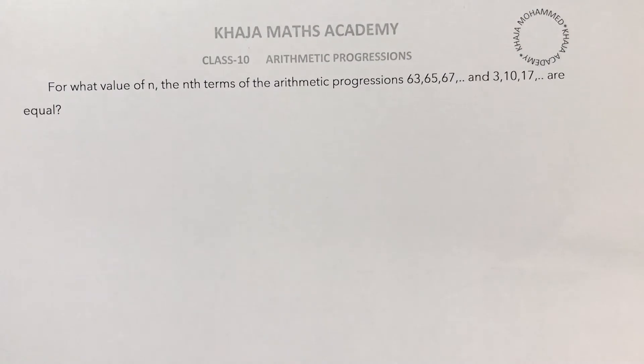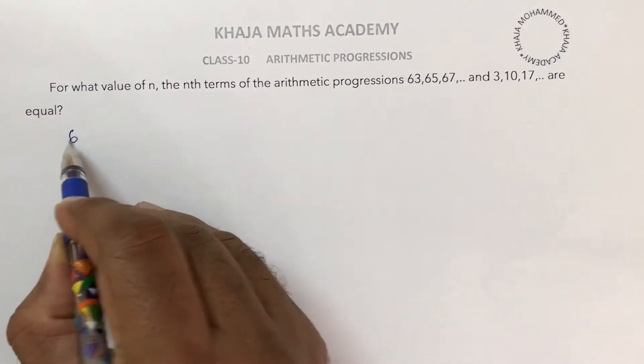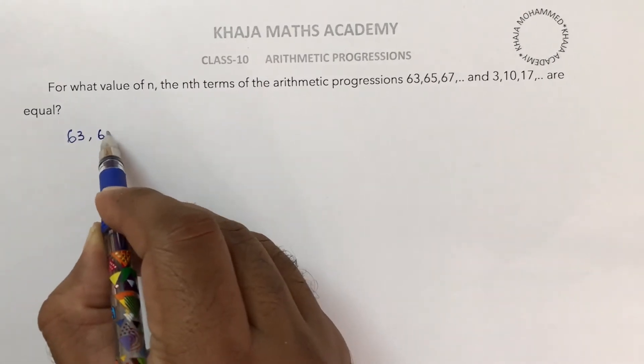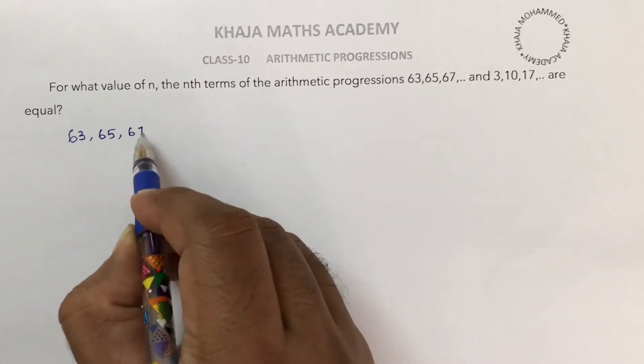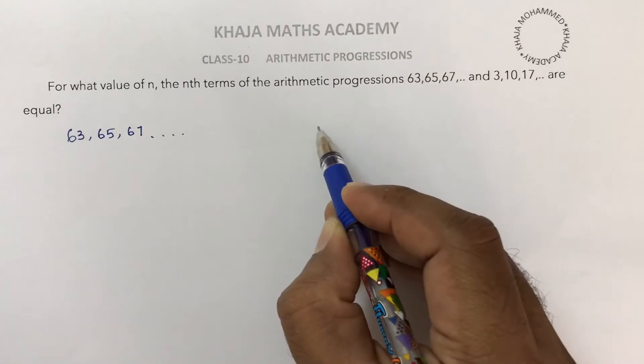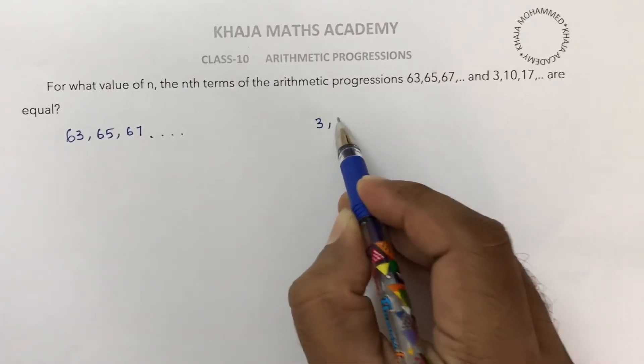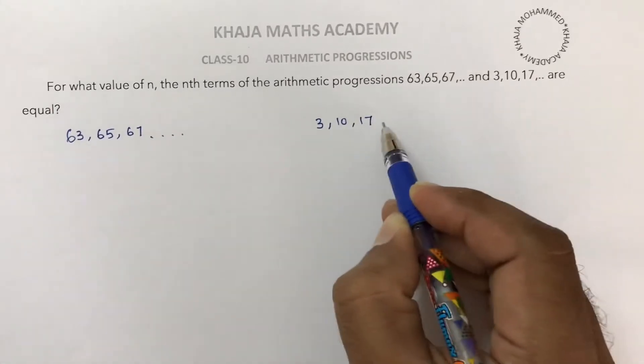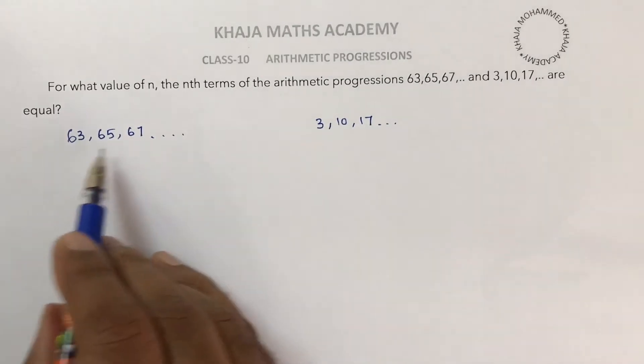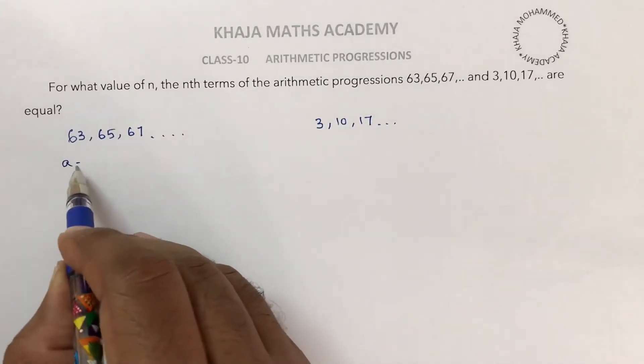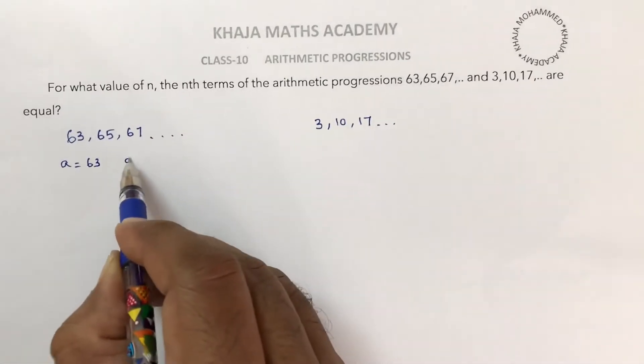For what values of n, the nth terms of the arithmetic progressions 63, 65, 67... and 3, 10, 17... are equal? In the first series, the first term is 63 and common